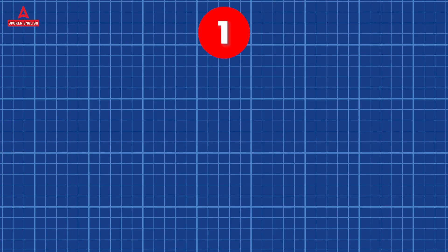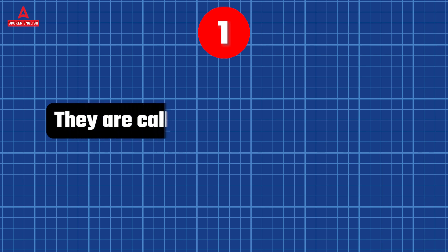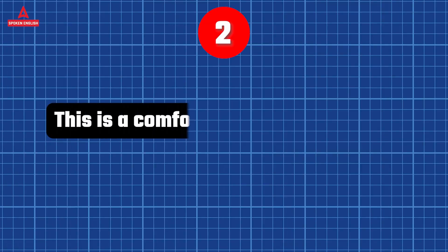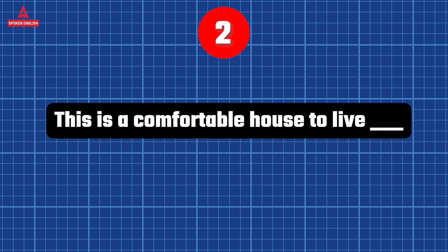First, I will ask you two questions — you have to write the answers. Question number one is here on your screen: 'They are called dash different names.' Number two: 'This is a comfortable house to live dash.' Whatever you need to fill in the blanks, write it down. We will confirm the correct answers at the end of the video.